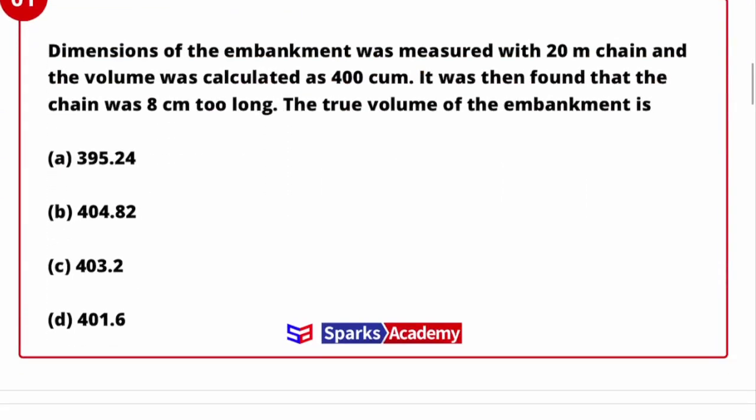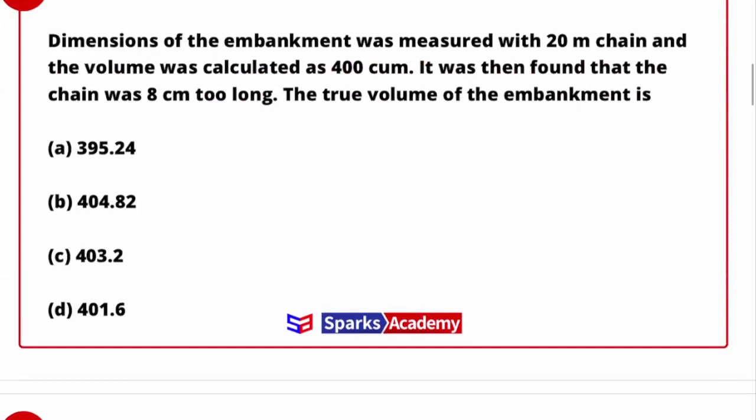First question: Dimensions of the embankment was measured with 20 meter chain and the volume was calculated as 400 cubic meters. It was then found that the chain was 8 cm too long. So there's an error in the chain length. Instead of 20 meters, we have used a 20.08 meter chain. We need to find the true volume.